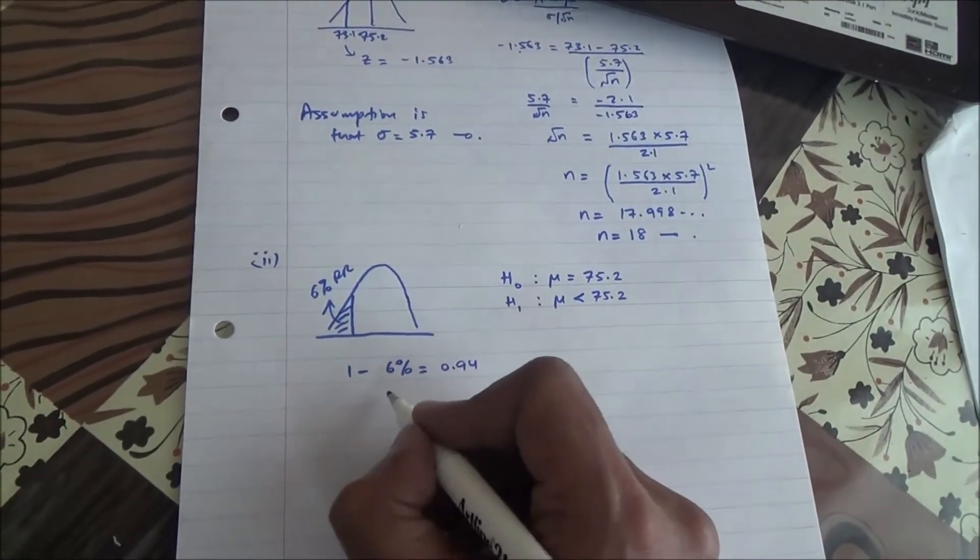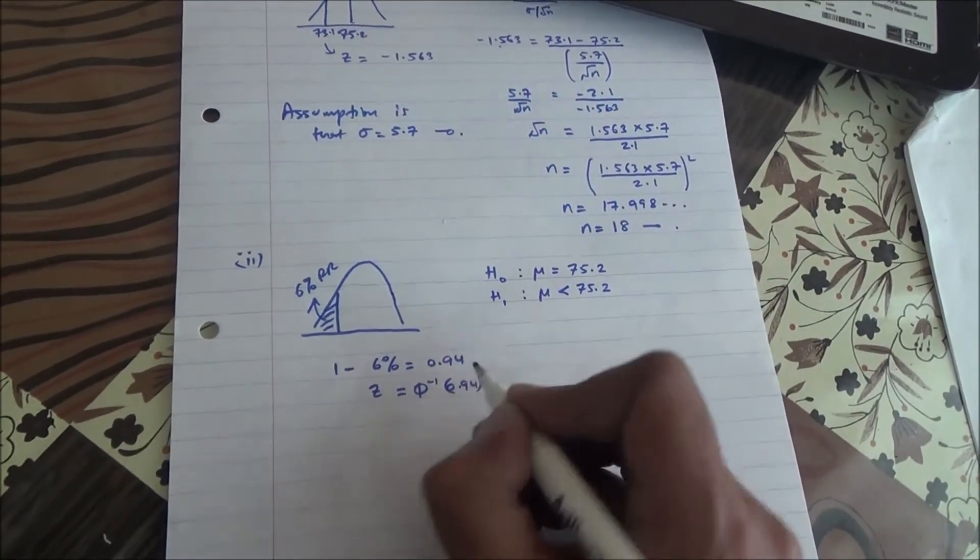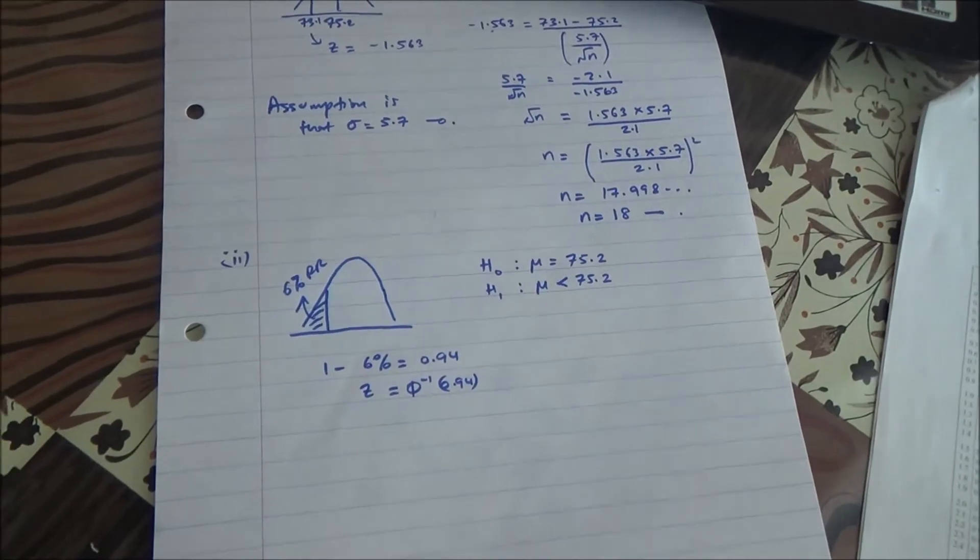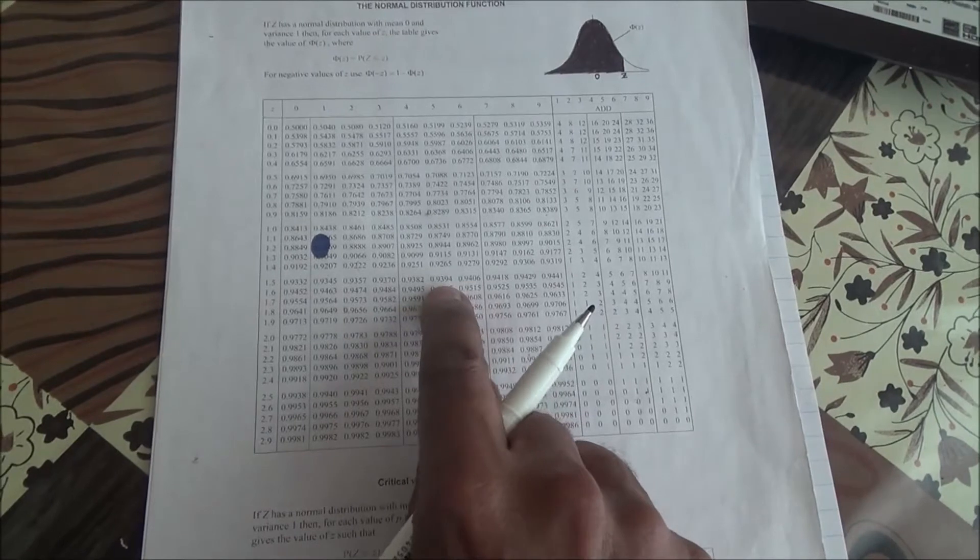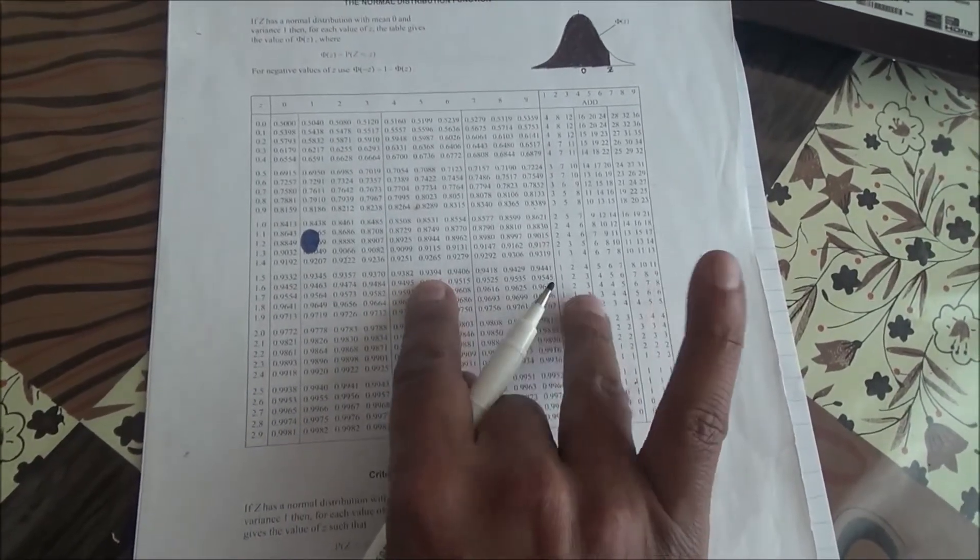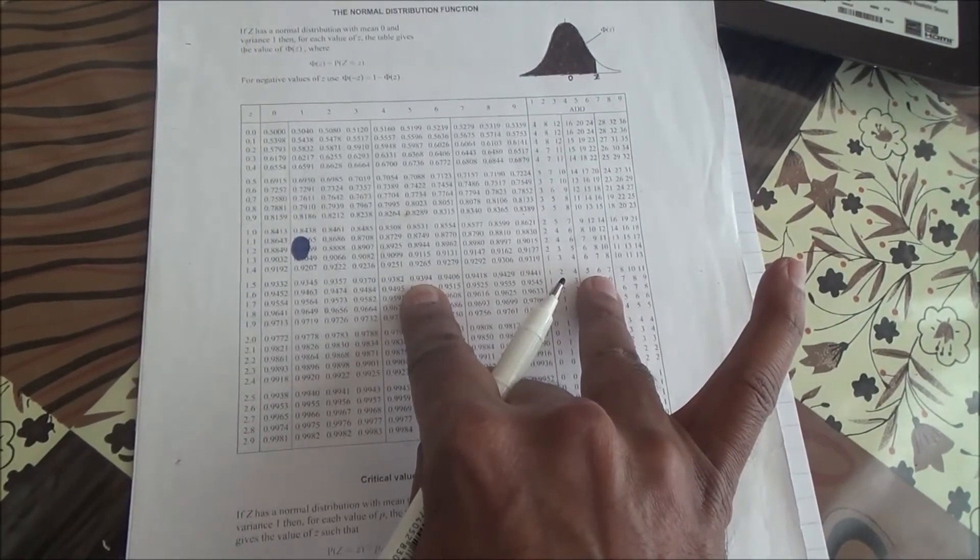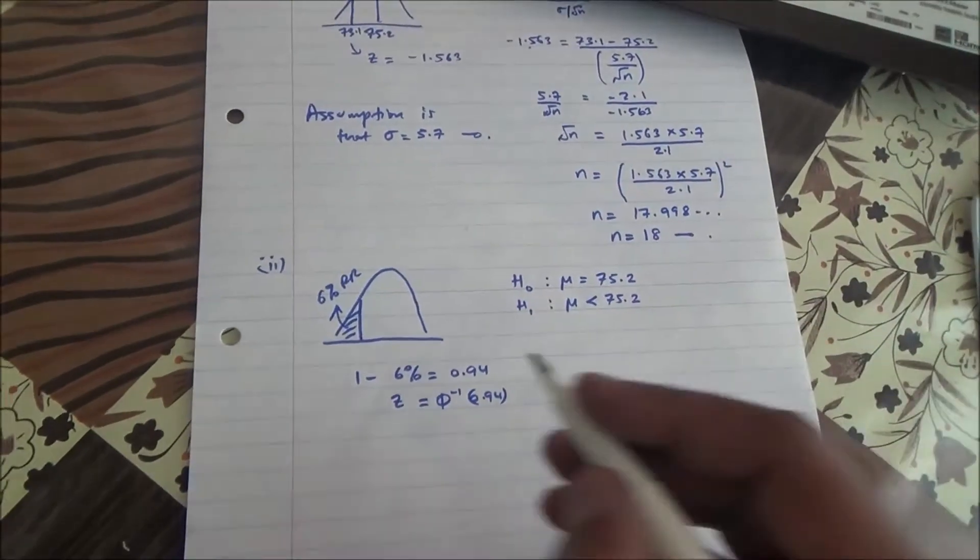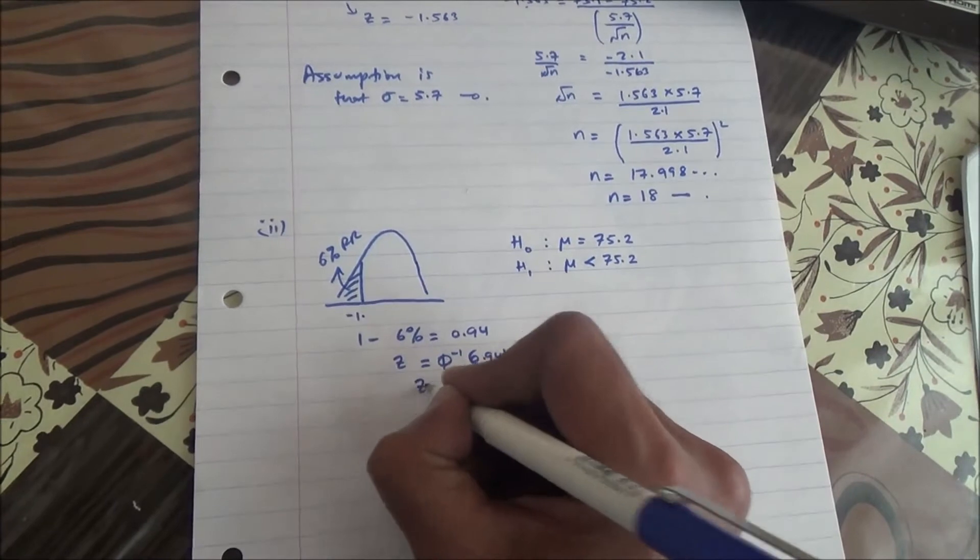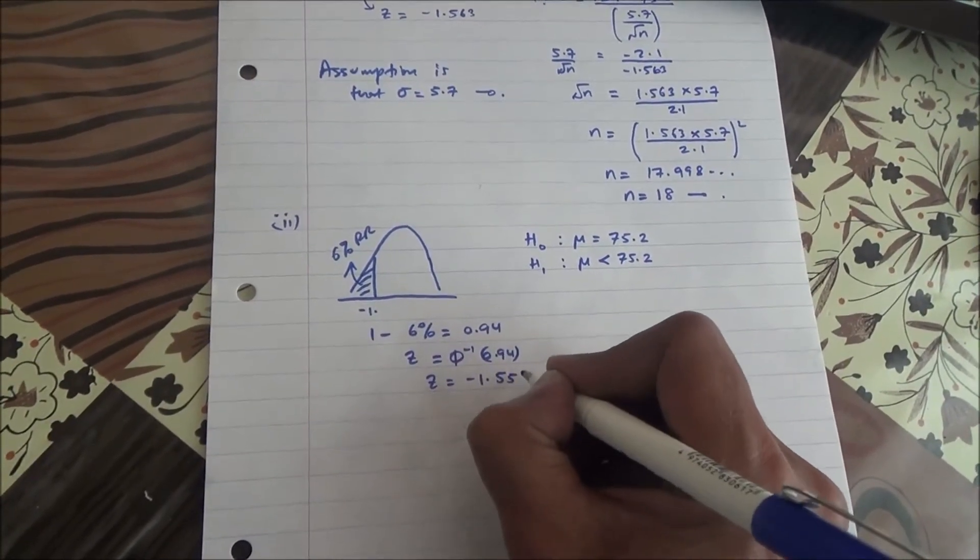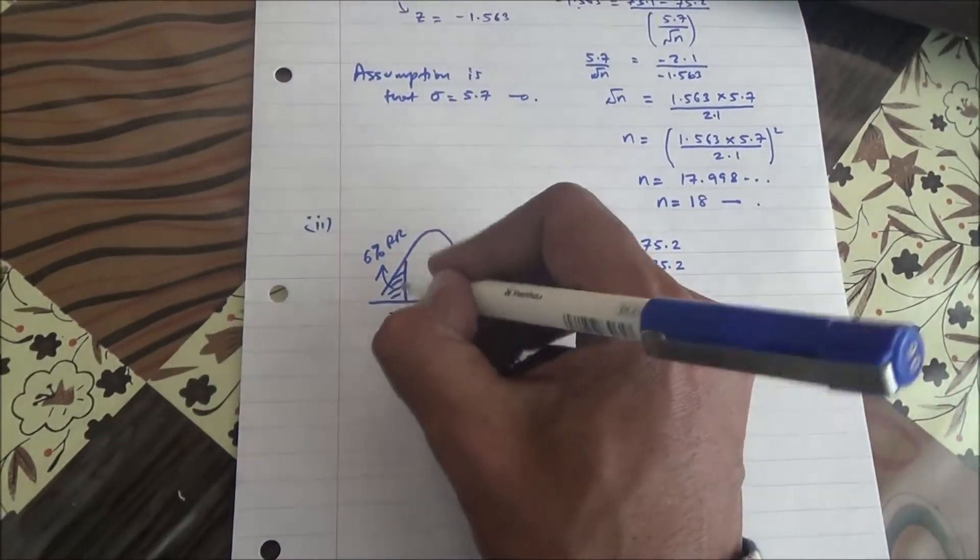And if you check out for 0.94, the z-value of the inverse of 0.94, and that's going to give us from our table here, 0.94, here we are, 1.55, and then again here we've got 6, so plus that, 1.55. So we're looking at then the z-value being negative 1.55, so this will be the value of the critical region.